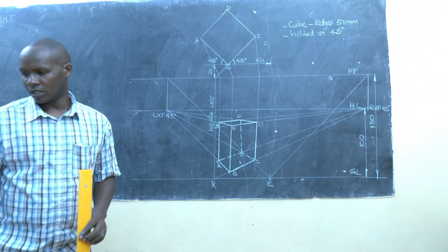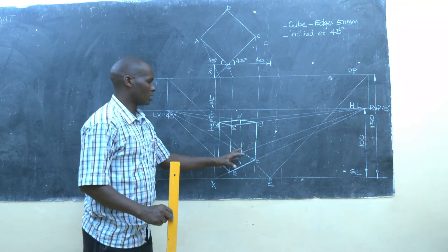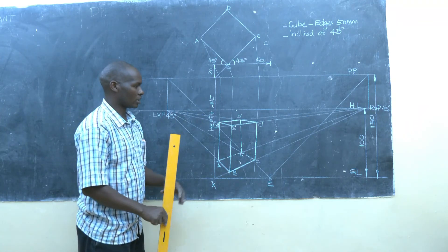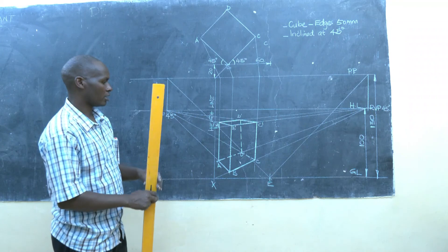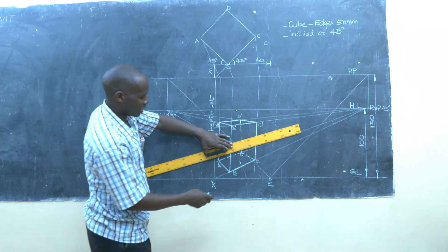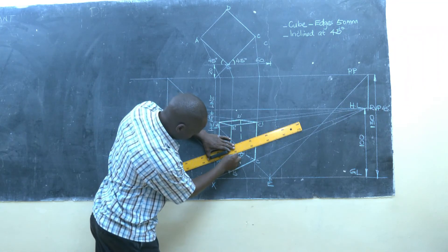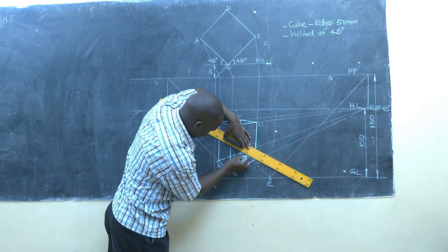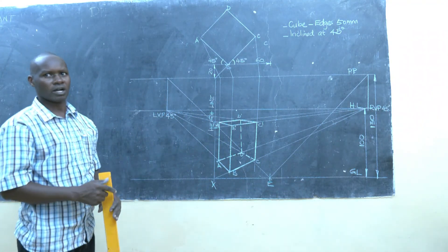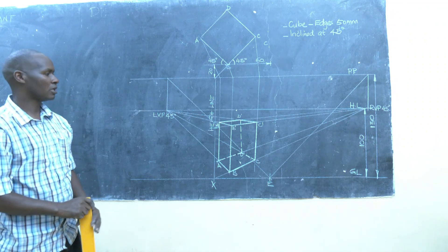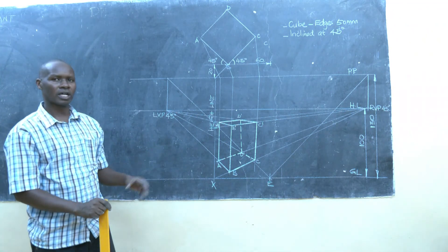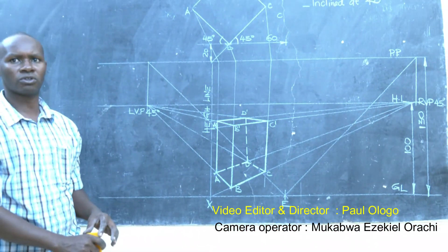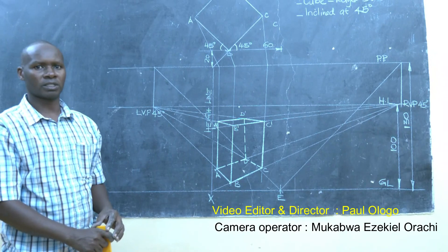Remember in technical drawing we use a broken line to indicate hidden details. These lines are on the other side of the cube — not on the front side — that's why we use the broken line to show hidden details. So there we are — we have our two-point perspective representation of a cube. Thank you for staying with me. Welcome to my next video tutorial on a two-point perspective where we'll be talking about a stepped block in perspective. Thank you.